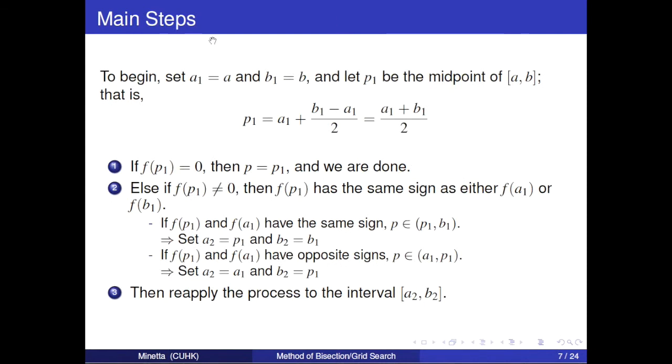Here are main steps. To begin, set a1 equals a and b1 equals b. And let p1 be the midpoint of interval [a, b]. That is p1 equals half of sum of a1 and b1. Then we check function value of p1. If f(p1) equals zero, then we get what we want.